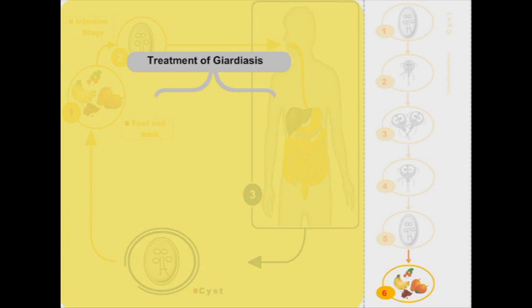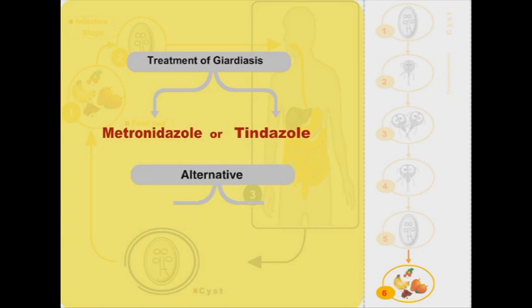Treatment of giardiasis is usually started with metronidazole or long-acting tinidazole. If metronidazole is not effective, alternative treatments include furazolidone or albendazole.